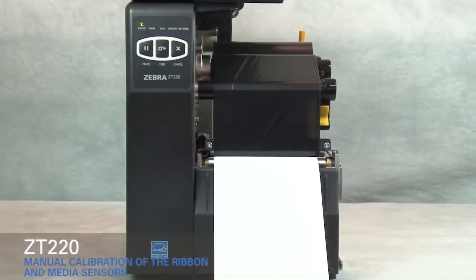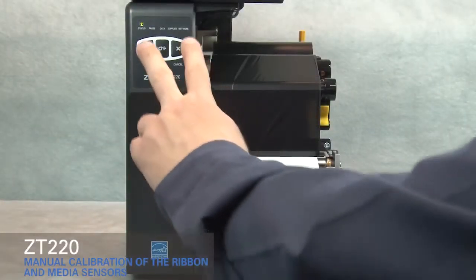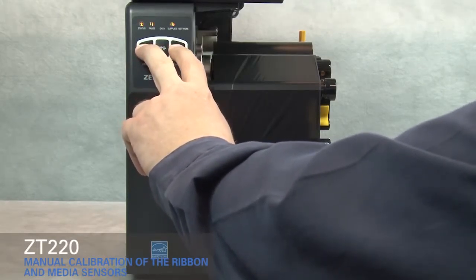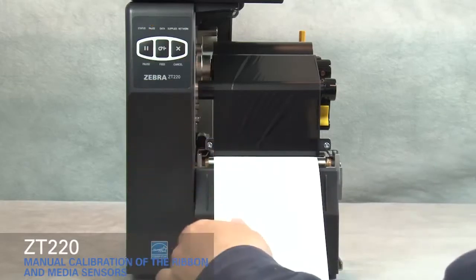Press and hold pause and cancel for two seconds. The status light and supplies light flash yellow once. The pause light blinks yellow.